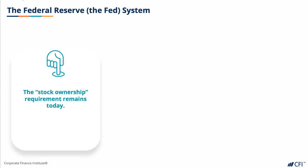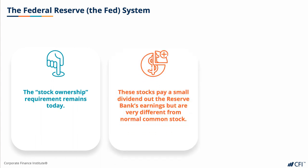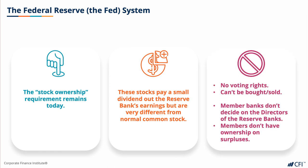This archaic stock ownership requirement still remains today amongst the 3,000 American commercial banks that are members, and has led to ambiguity and conspiracies about the Fed's independence and legal status. These stocks pay a small dividend out of the Federal Reserve Bank's earnings, but are otherwise very different from normal common stock. They do not have voting status, cannot be freely bought or sold, nor borrowed against. The member banks do not get to decide on the directors of the Federal Reserve Banks and have no ownership on the surplus or assets of the Federal Reserve Banks. So these shares are strictly symbolic.